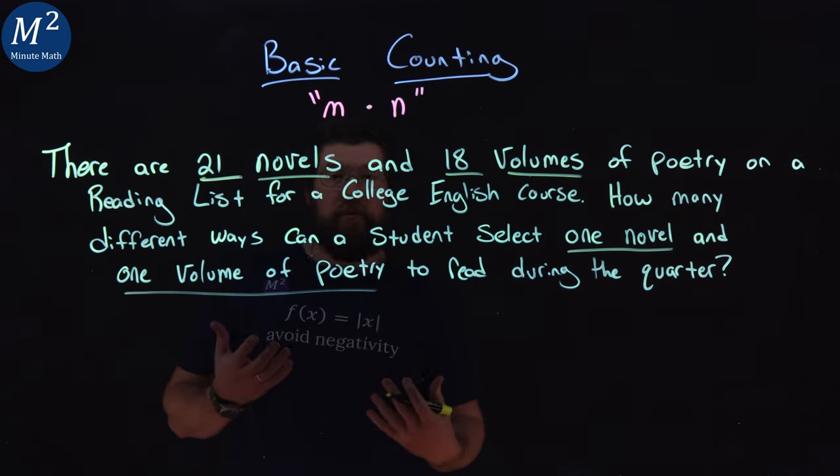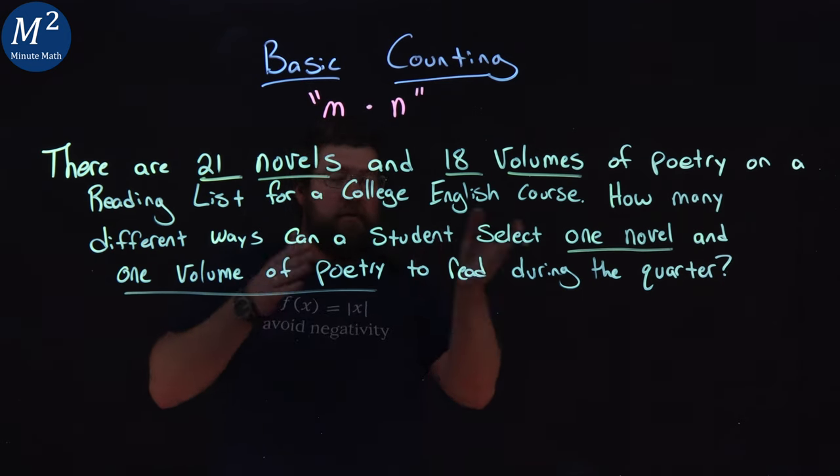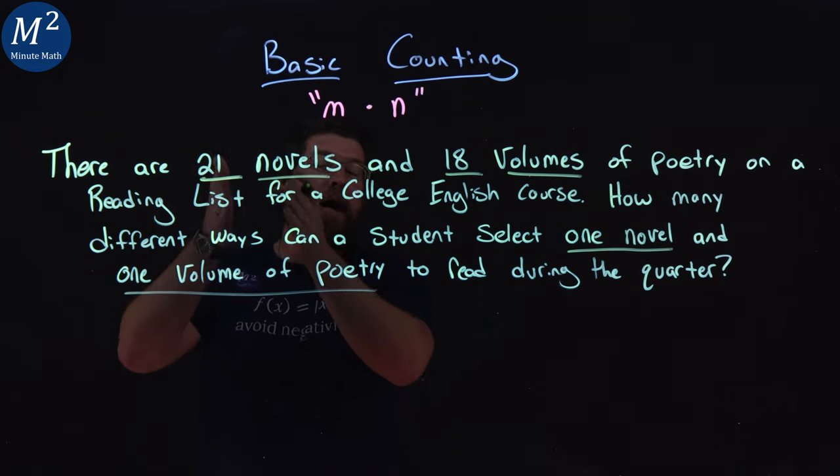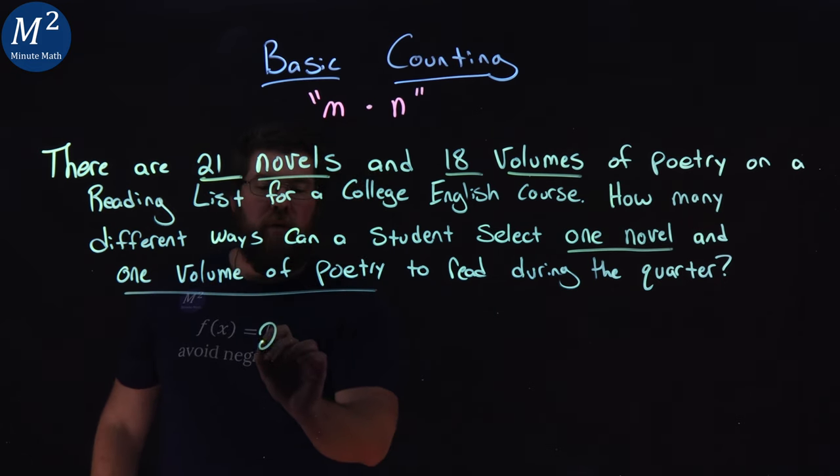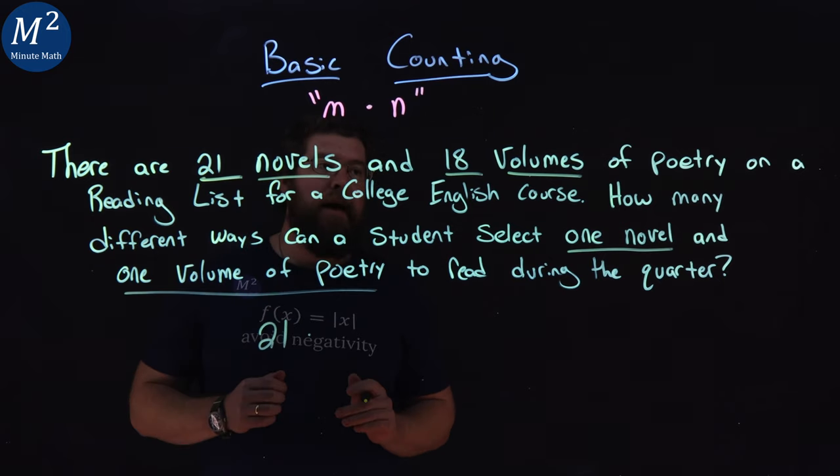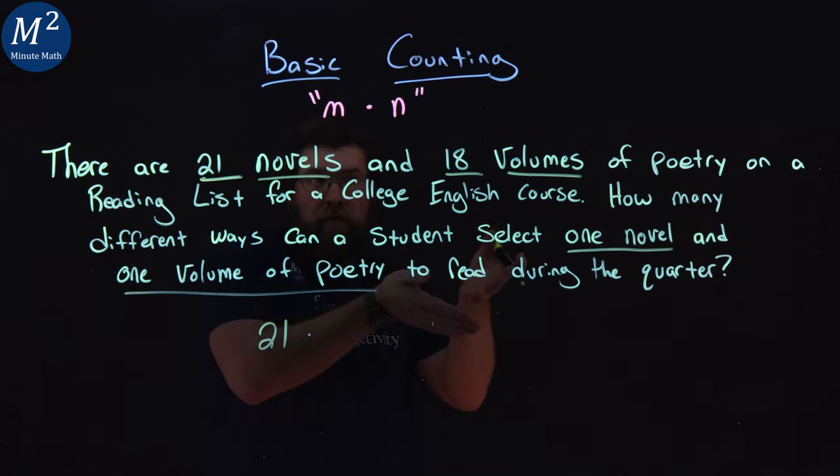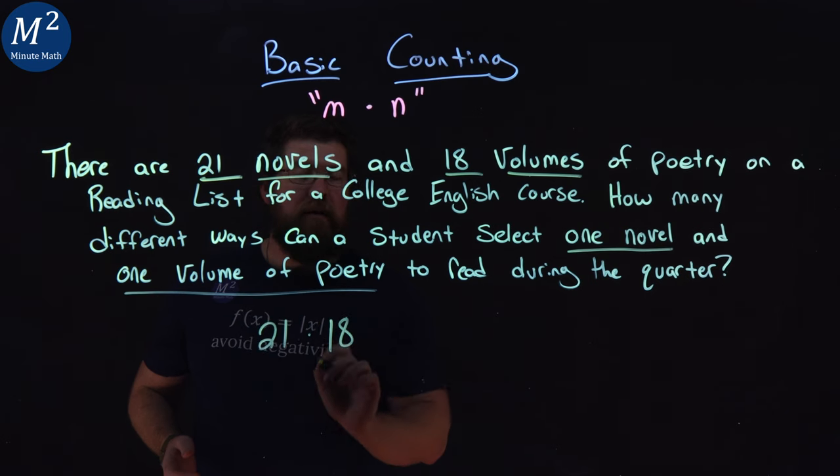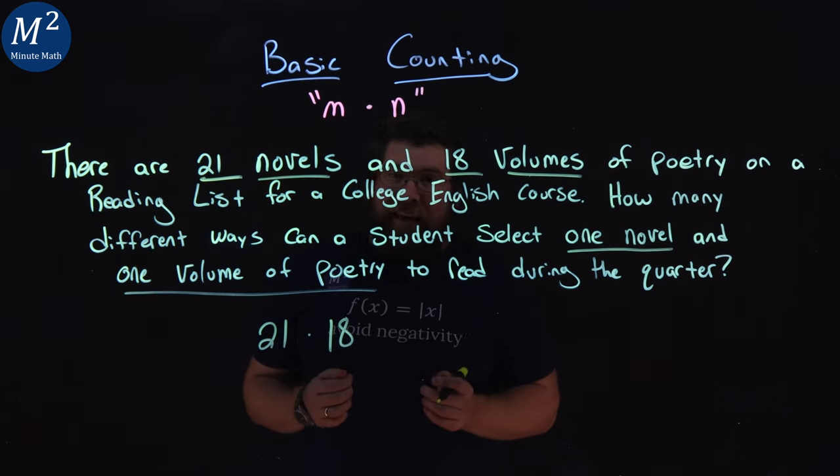This is our basic counting rule. We take one of each one, so there's 21 options for the novels. We have 21 ways we can pick a novel, and we multiply that by the number of volumes we have, which is 18, because we can pick one of the 18.